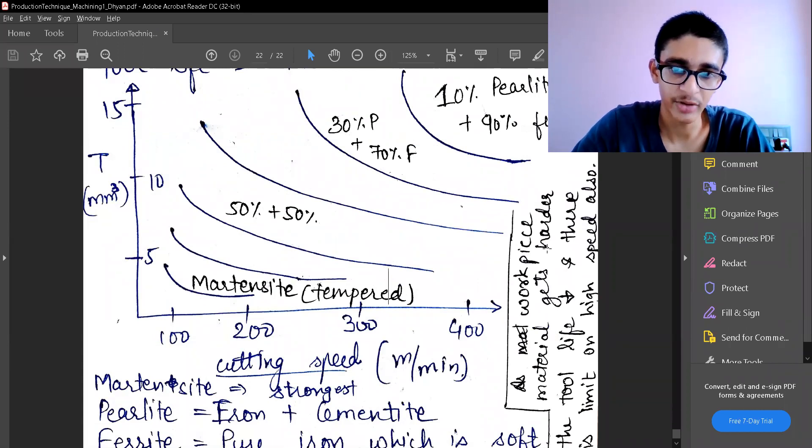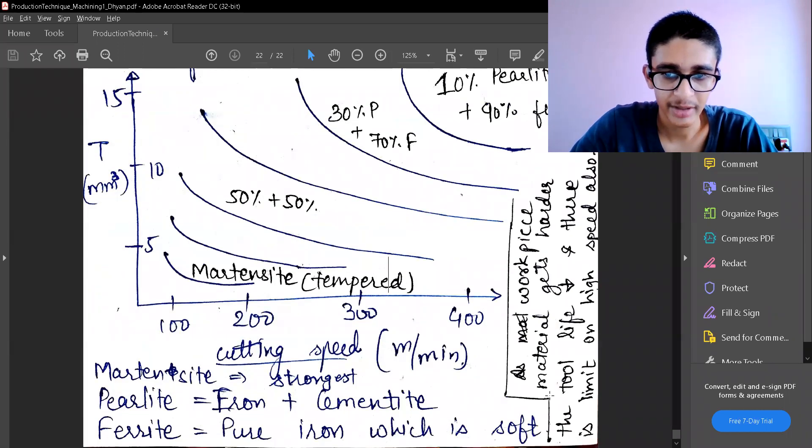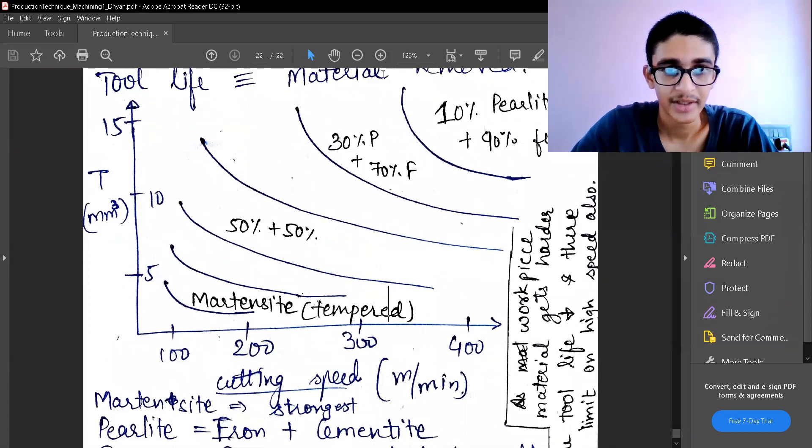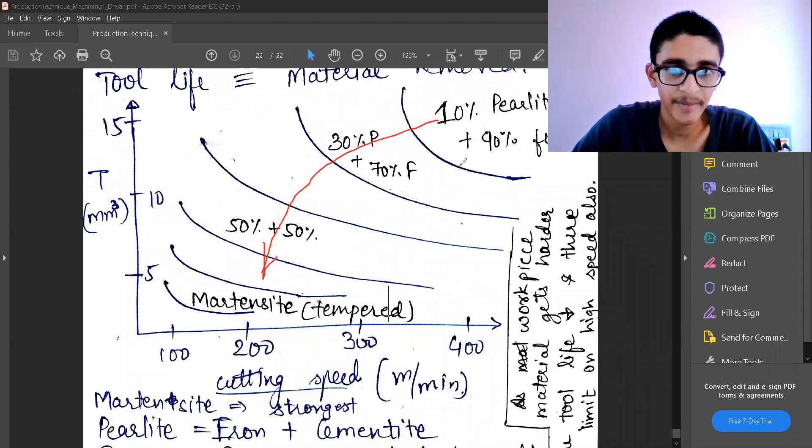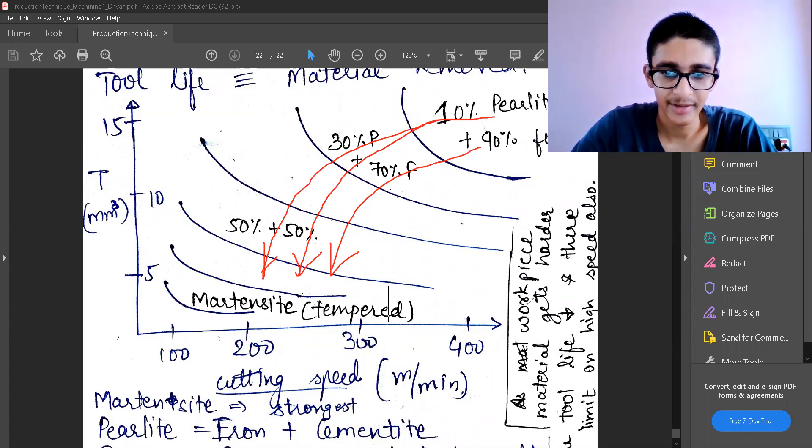So workpiece material gets harder, the tool life decreases. This is how the material of the workpiece is getting harder and harder in this direction from pearlite to martensite, or ferrite to martensite. As my material, the workpiece material, gets harder, the tool life is decreasing at constant velocity.